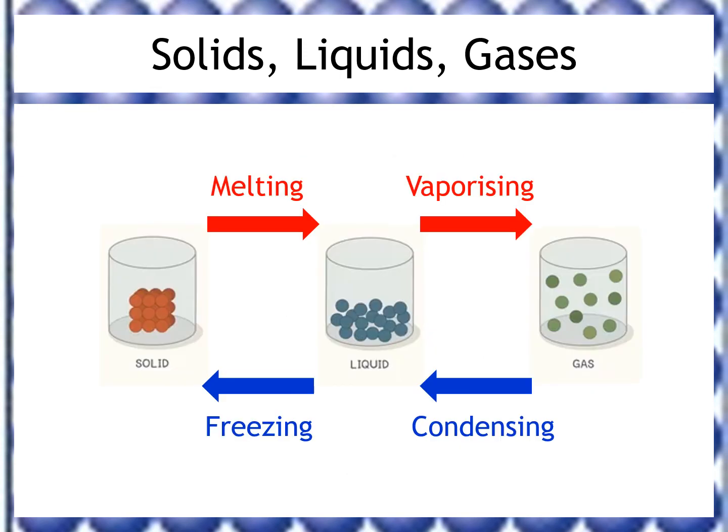We should also revise the names of the processes where we change state. Starting from solids: if we add heat energy, the solid will eventually melt and become a liquid — the bonds between solid particles break so they can swap places. Going from a liquid to a gas, the particles completely break free of each other and spread out; that process is called vaporizing.